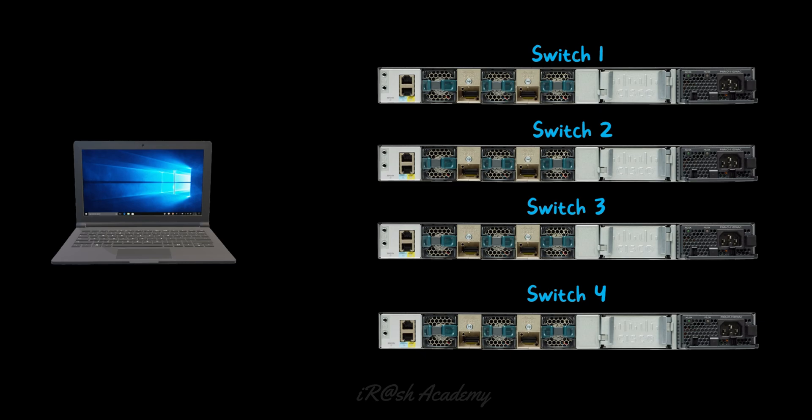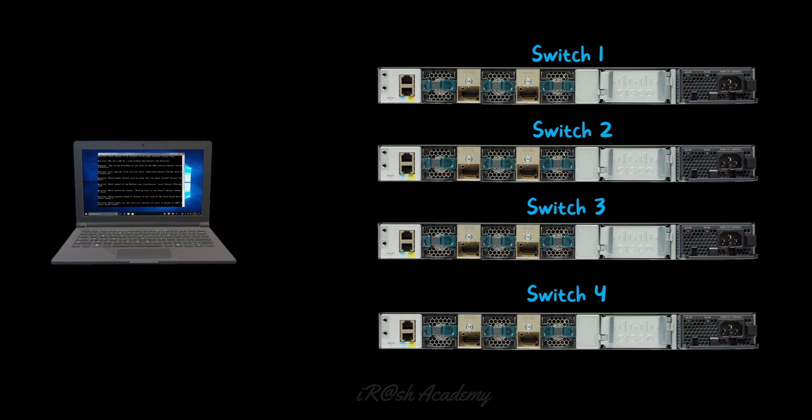If you want to take the console connection of Switch 1, attach the console cable to the Switch 1 console port and you get access. Once done, simply swap the console connection to Switch 2, then Switch 3, then Switch 4 the same way. You don't need to unplug anything at the laptop side or close and reopen the terminal program. Just swap the RJ45 connector of the console cable across the multiple network devices and press Enter — you get the console connection of the connected device without making any changes on your laptop or PC.